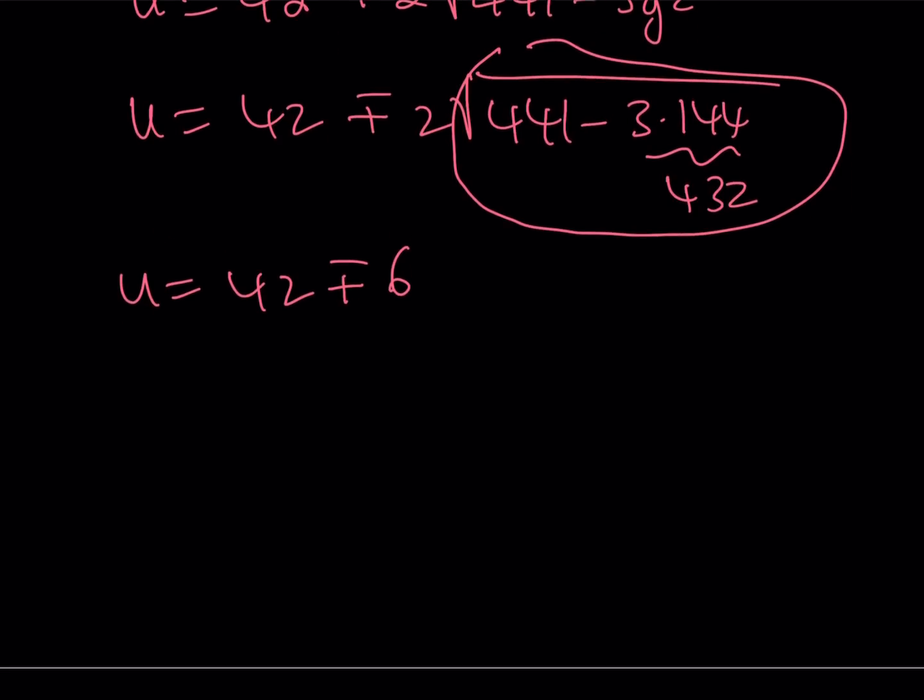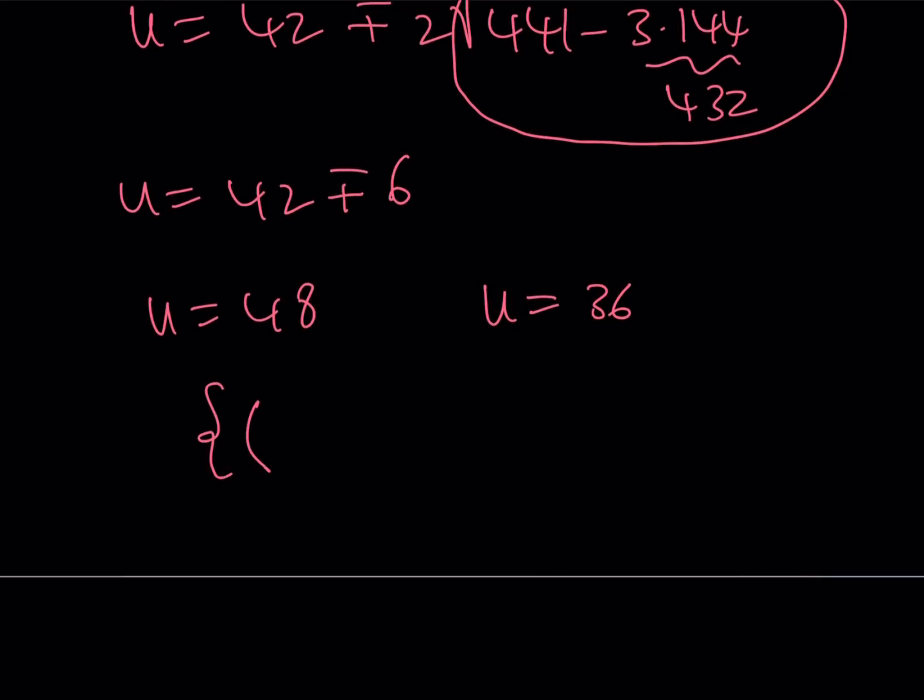From here, we're going to be getting two values. U is either 42 plus 6 or 42 minus 6, but that represents the x and y values. So this means that our solutions are going to be made up of two pairs: 48, 36 and 36, 48. So those are the x, y values that work, and those are the only values that work.